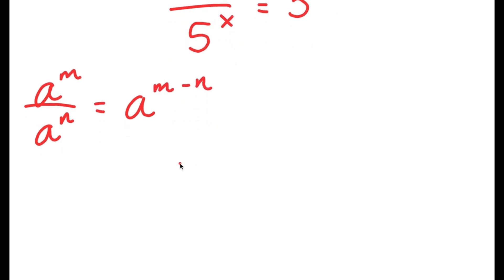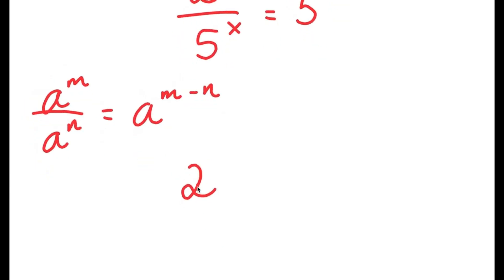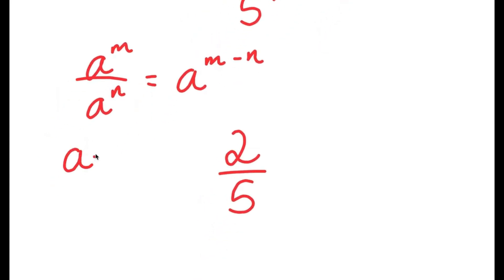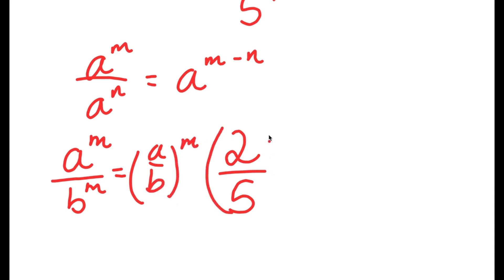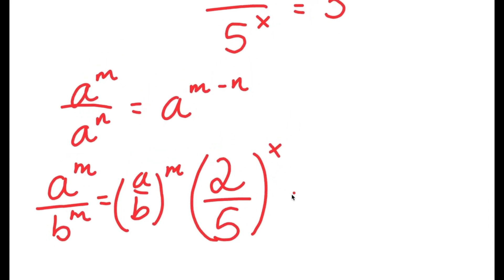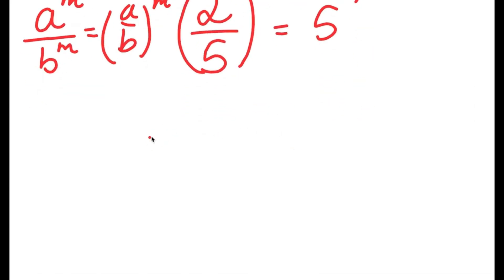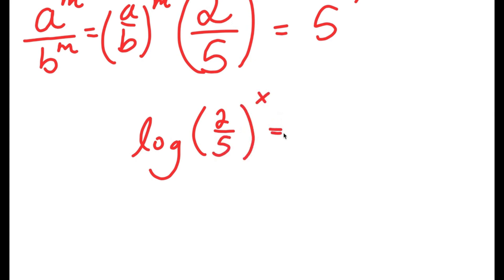So 2 to the power of x over 5 to the power of x is equal to 2 over 5. Another property is that if I have something in the form a to the power of m over b to the power of m, this is equal to a over b to the power of m. So 2 over 5 to the power of x, and this is equal to 5 to the power of 7.